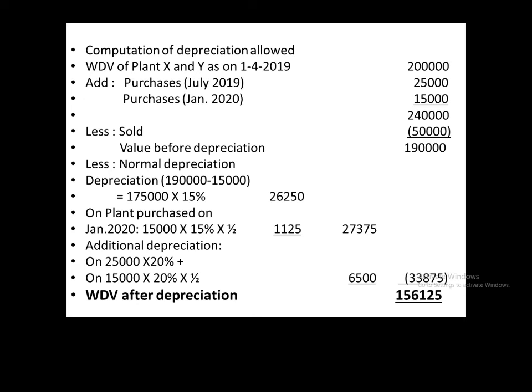The January purchase of 15,000 gets half rate of additional depreciation, so 20% becomes 10%, giving 1,500. Total normal depreciation is 27,375. Additional depreciation at 20% on eligible purchases: the July purchase gets full 20%, and the January purchase gets half, i.e., 10%. Total additional depreciation is approximately 8,000. Total depreciation allowed is 33,875.